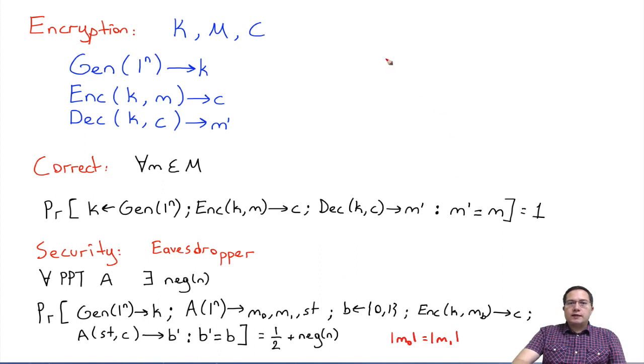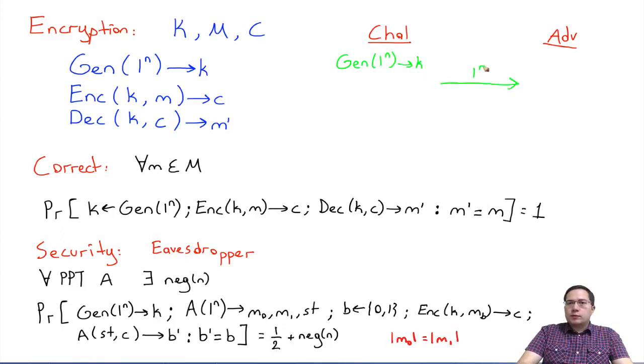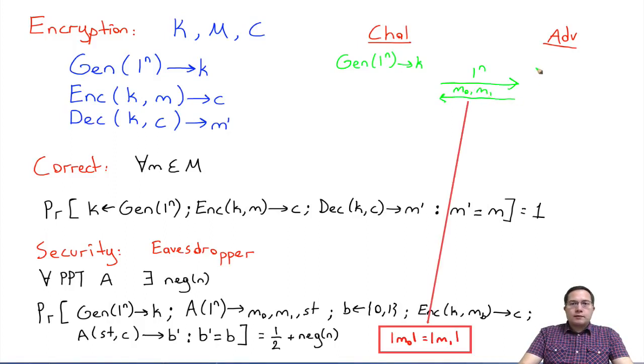We can also define this as a game between a challenger and an adversary. When you visualize this probability as a game it will look like this. The challenger needs to generate using the security parameter this key k, and it needs to give the adversary this security parameter. Then the adversary, we have no idea what it does, but eventually it will give us m0 and m1. Now since here we are visualizing the adversary as a whole, we don't need to get the state and give it back. The adversary can keep it locally.